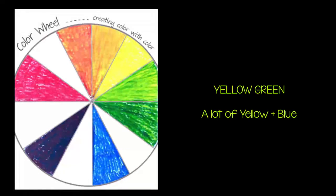Our second tertiary color is yellow-green. For yellow-green, we will use a lot of yellow and a small amount of blue. Blue is still more dominant than yellow. Like we did with the yellow-orange, lay down a very fine amount of blue and color over it using yellow and lots of pressure.